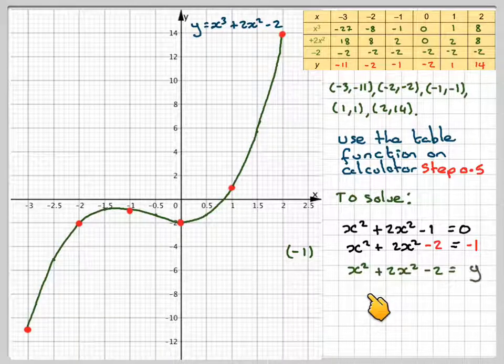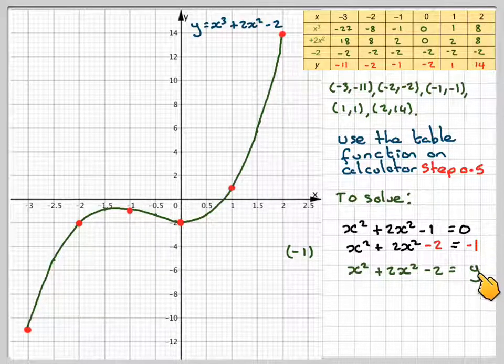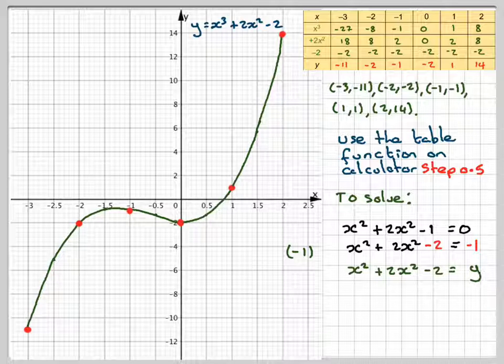So I drew the curve x cubed plus 2x squared minus 2 is equal to y. So I need to draw the extra line I need to draw on will be y is equal to minus 1.